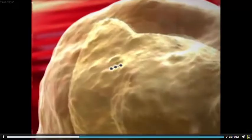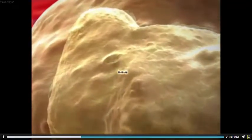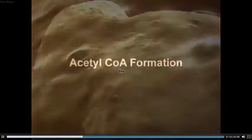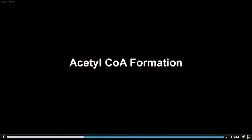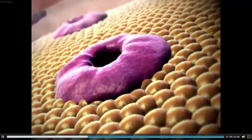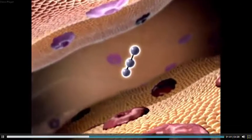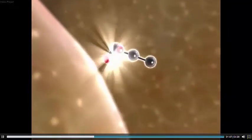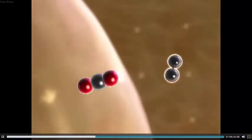However, glycolysis has produced pyruvic acid, which still has a lot of energy available. Let's follow this pyruvic acid molecule into a mitochondrion to see where most of the energy is extracted. As the molecule enters the mitochondrion, one carbon is removed, forming carbon dioxide as a byproduct.